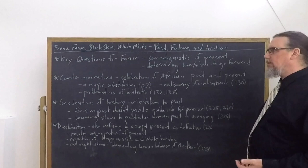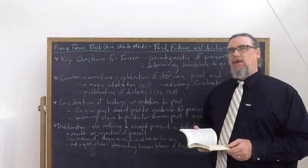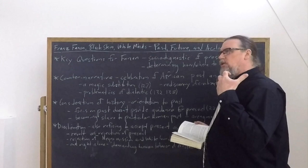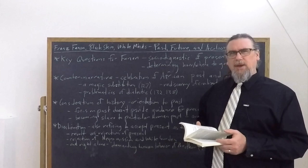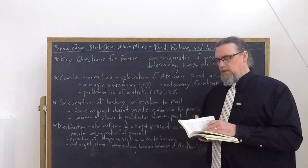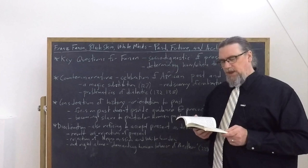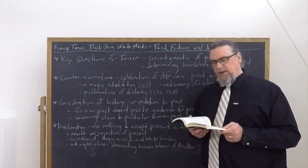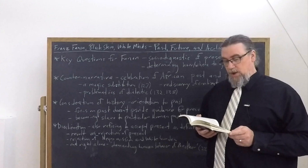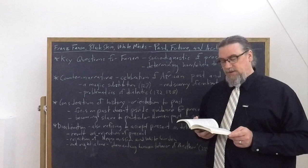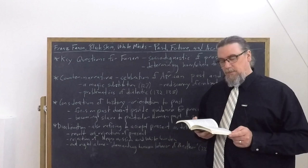And so he talks about the problematics of what he calls the dialectic. What is the dialectic? It's thinking things through. Thinking about whether talking about all these discoveries changes the current dynamic of the present. And so he says, a little bit after that section, my unreason was countered with reason. My reason with real reason. Every hand was a losing hand for me. I analyzed my heredity. I made a complete audit of my ailment. I wanted to be typically Negro. It was no longer possible. I couldn't make that recourse. I wanted to be white. That was a joke. And when I tried on the level of ideas and intellectual activity to reclaim my negritude, it was snatched away from me. Proof was presented that my effort was only a term in the dialectic.